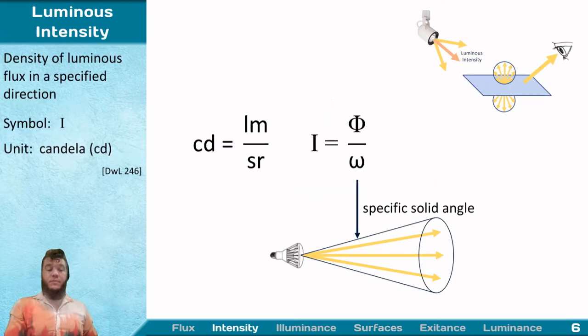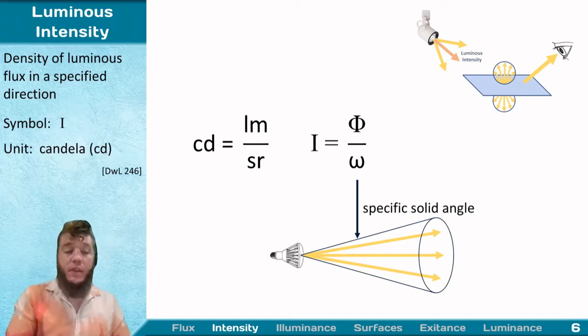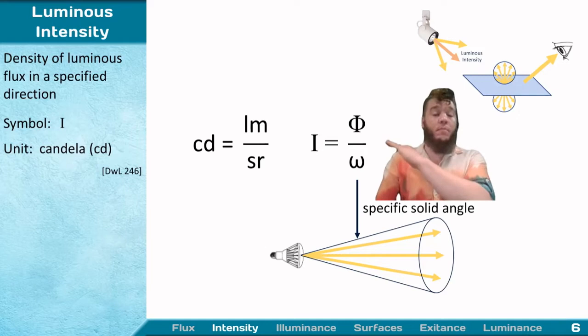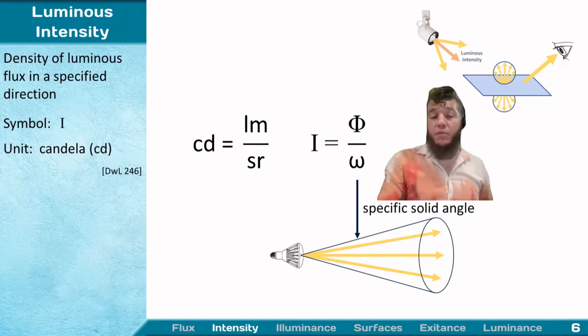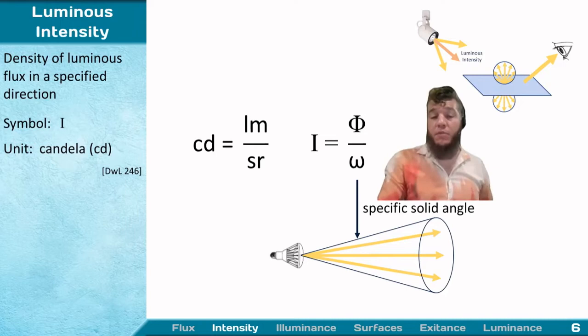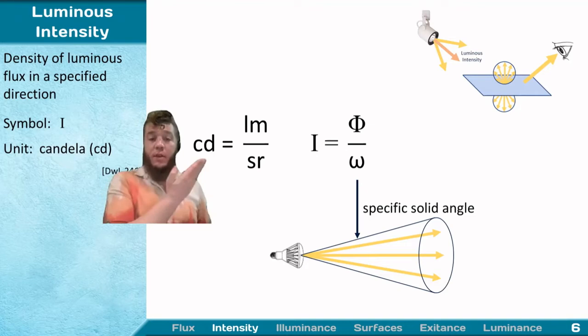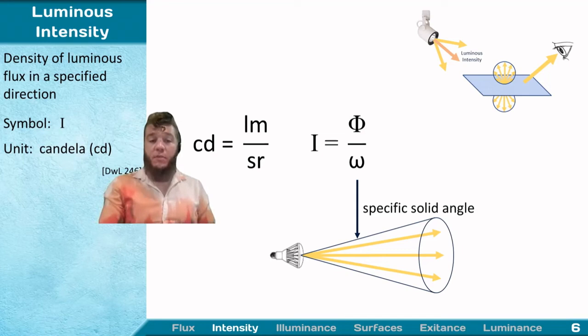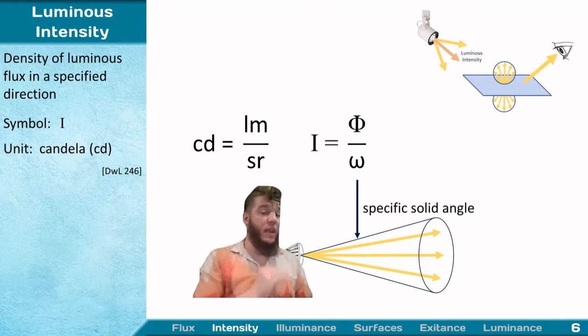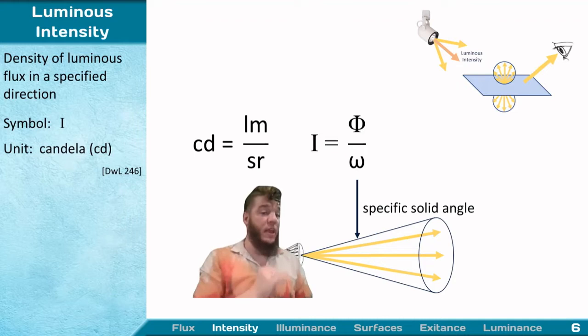Moving on to luminous intensity. Luminous intensity is luminous flux bounded by a specific solid angle. This is our fundamental relationship: I equals phi over omega. The units of candela break down to lumens per steradian. This is a vector or directional quantity — it refers to a specific solid angle, not just any solid angle with the same value.